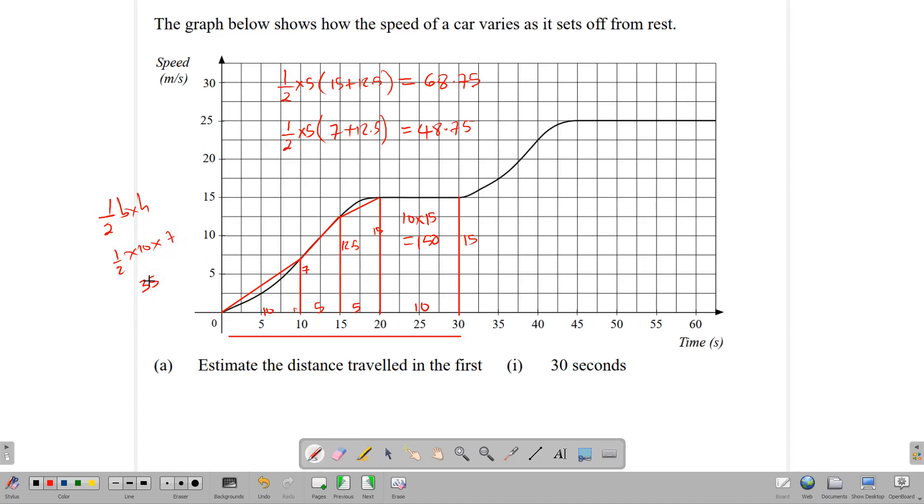So now to find the total distance traveled, we need to add up all of these numbers. We add 150 plus 68.75 plus 48.75 plus 35, which gives us 302.5 meters. And so this is one way in which we can apply the trapezium rule.